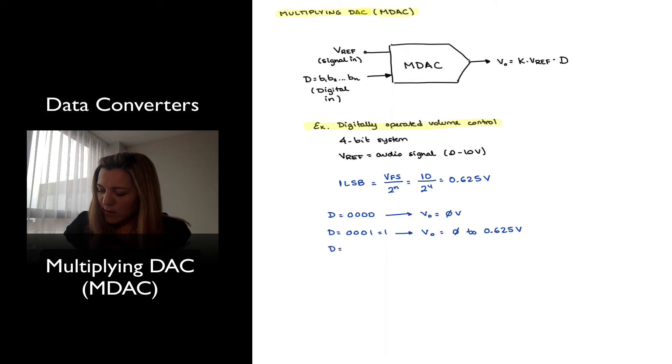If my digital input signal was equal to 1000, which is a digital 8, then my output signal is going to vary from 0 to 8 times the LSV size, which is equal to 5 volts. So that's my mid-range.